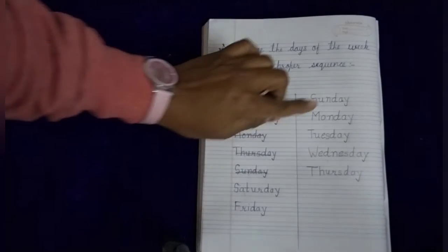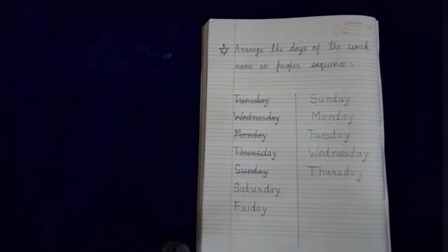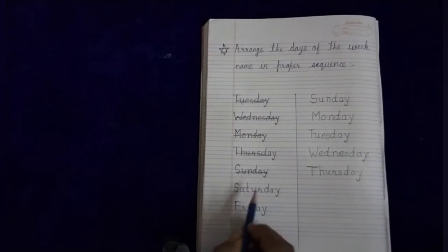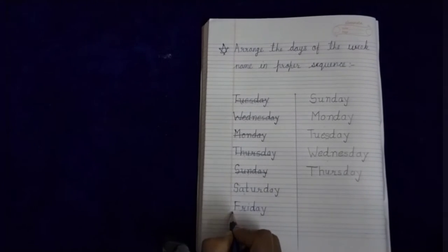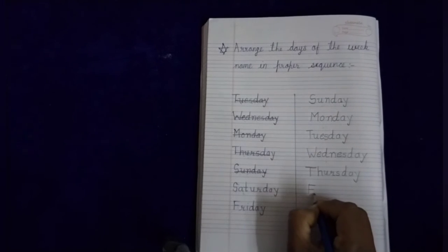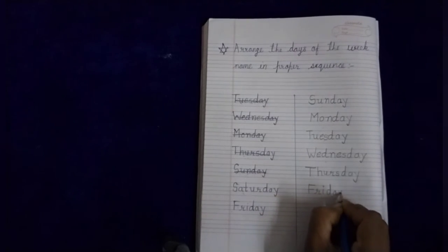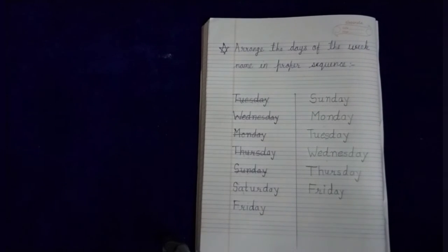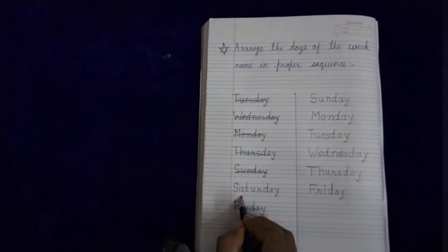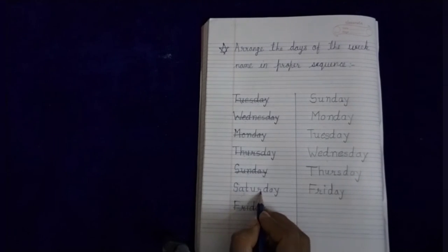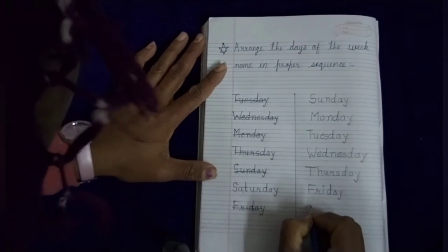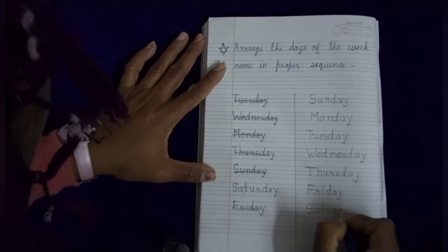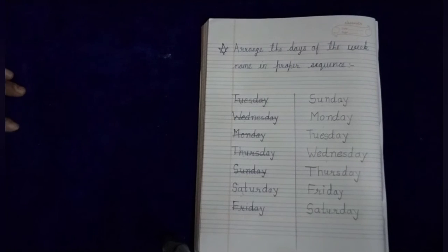Sunday, Monday, Tuesday, Wednesday, Thursday, Friday. Our next day is Friday. Where is the spelling of Friday? Is this Friday? No. Is this Friday? Yes, this is the spelling of Friday. F-R-I-D-A-Y. Friday. We write the spelling F-R-I-D-A-Y. Friday. And our last day is Saturday. This is the spelling of Saturday. S-A-T-U-R-D-A-Y. Saturday. So we write the spelling S-A-T-U-R-D-A-Y. Saturday.